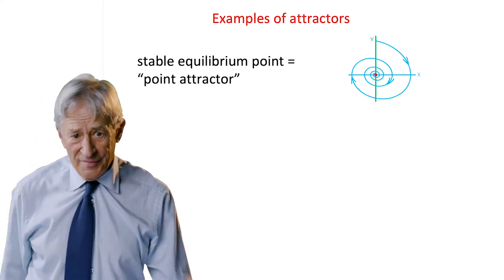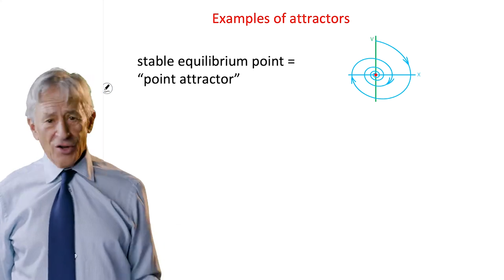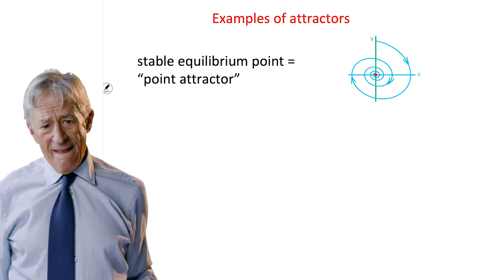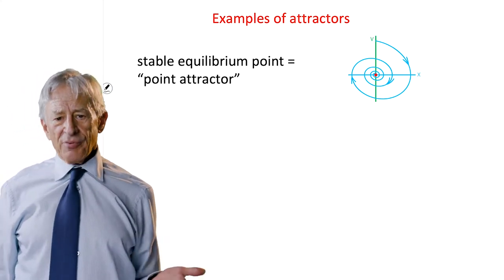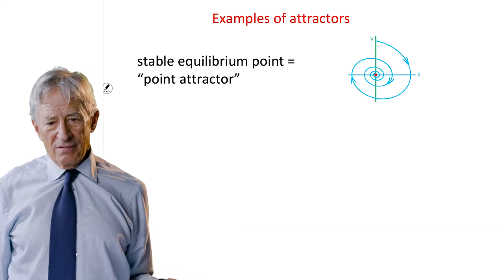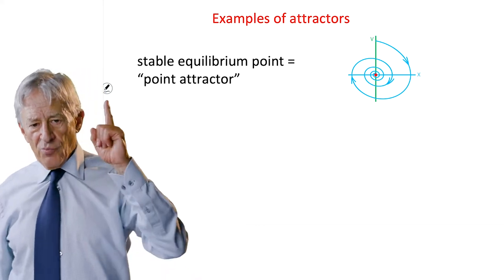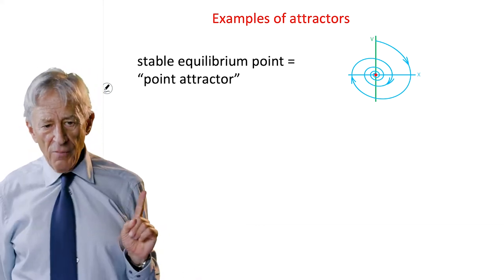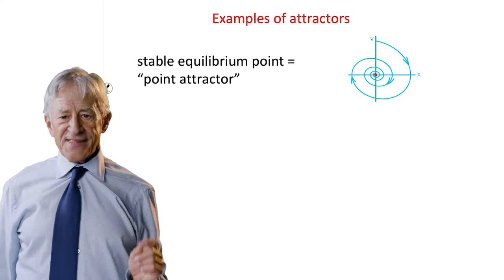Now, we've already seen an example of an attractor. We didn't call it that. But what is the stable equilibrium point? I mean, look at that red dot. That's one point, the point zero, zero.